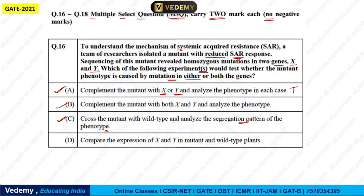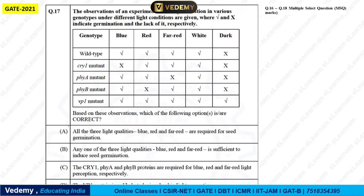Option D says: compare the expression of X and Y in the mutant and wild type plant. But this won't tell us much because it is already noted that this mutant shows reduced expression. So option D is not useful. The answer is A, B, and C — all three options are correct.